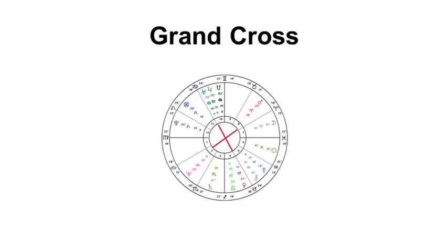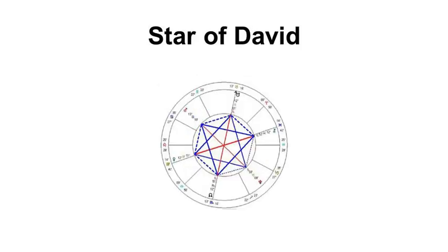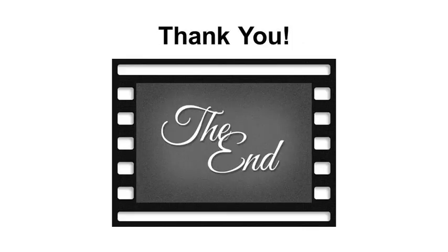A grand cross is made up of two oppositions and four squares. A grand sextile, also known as a Star of David, is made up of two intersecting grand trines. Thank you for watching.